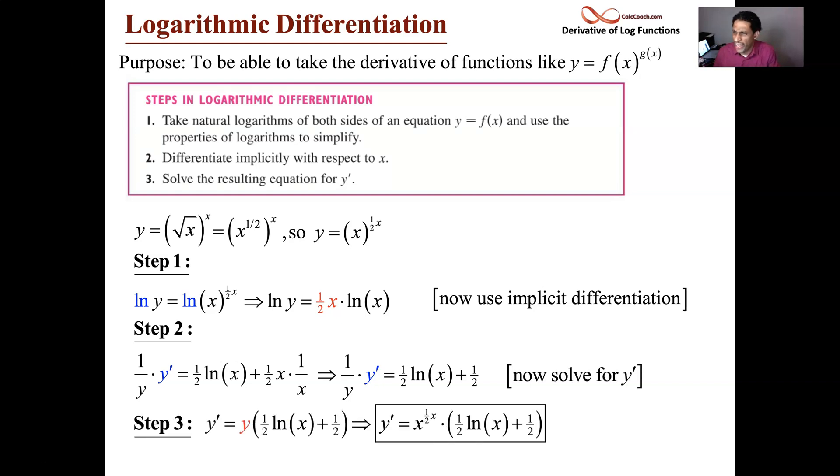We multiply by y, and we're done. You don't want to have the y involved, so just put the original version of the problem back in. y was equal to x to the half x. And you have it. y prime is equal to the original function times this product rule result of the exponent and the function, and the natural log of the function.